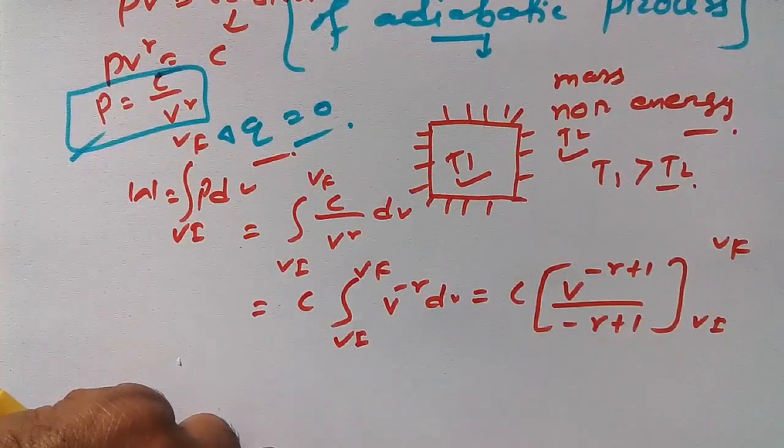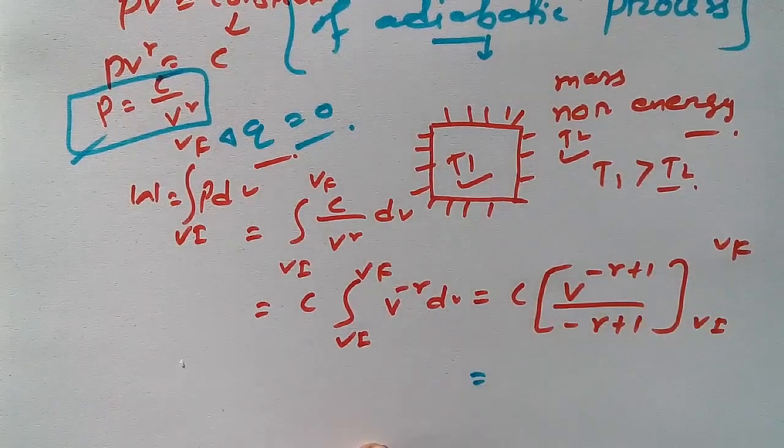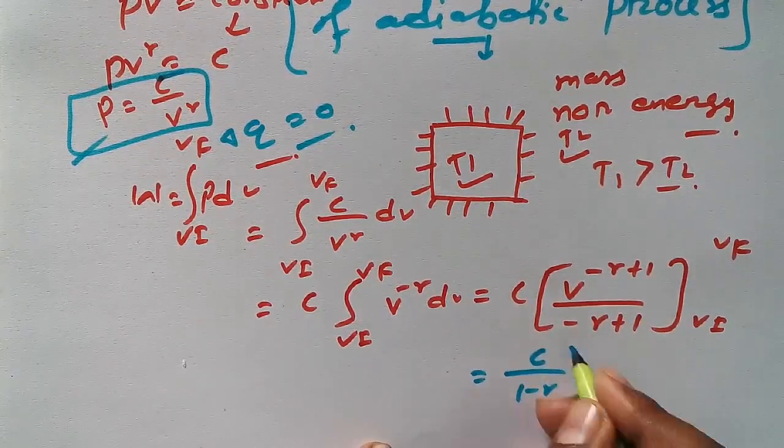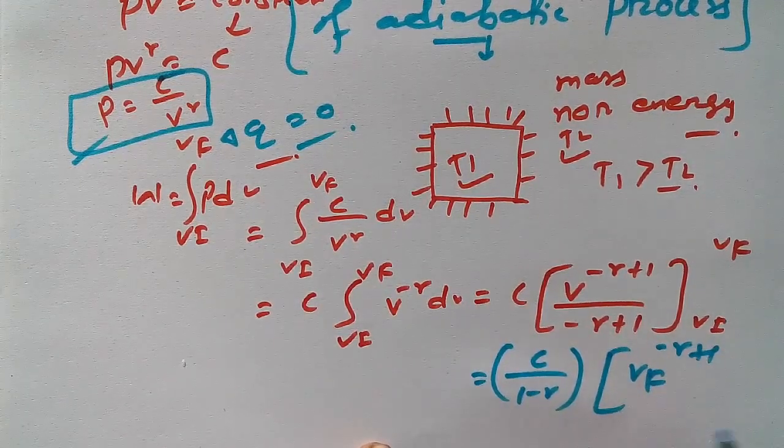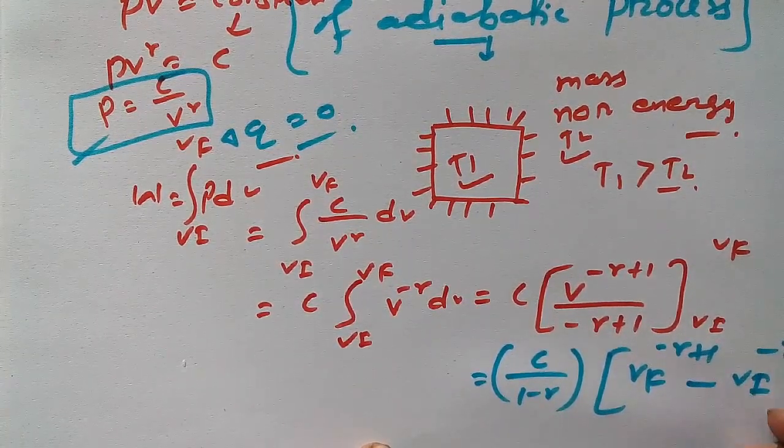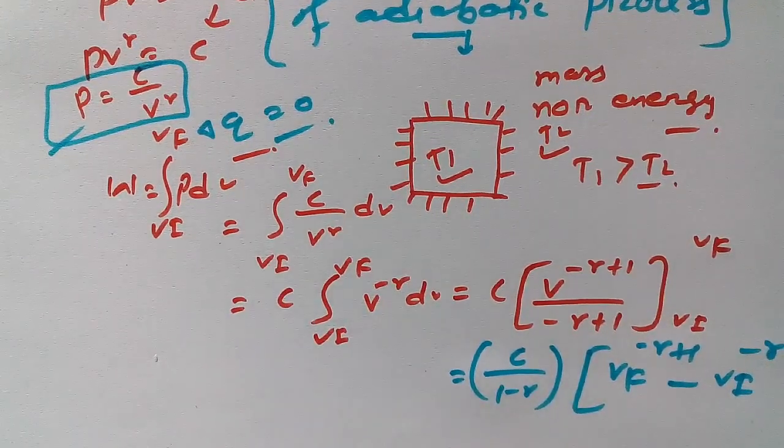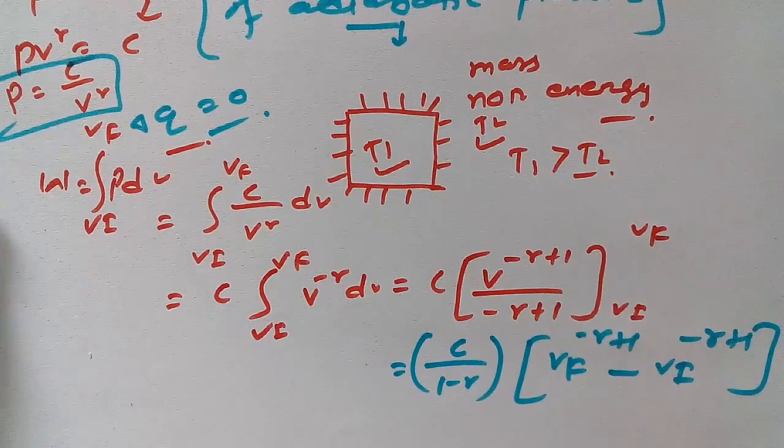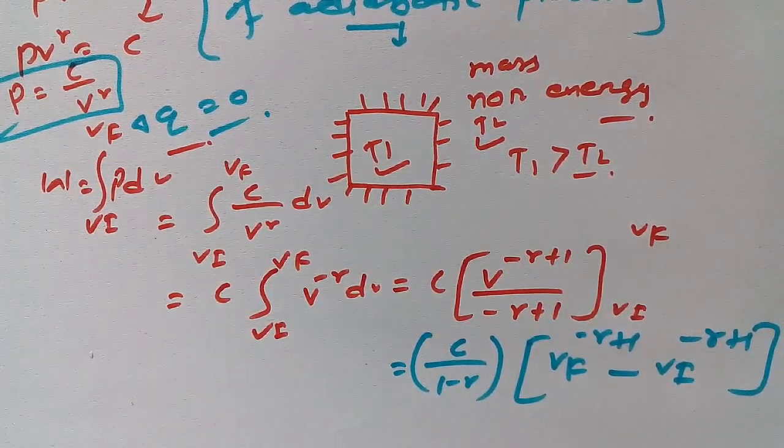Now we simplify again. So we get C over 1 minus gamma, times VF to the power minus gamma plus 1, minus VI to the power minus gamma plus 1. Now let's go to the next step.